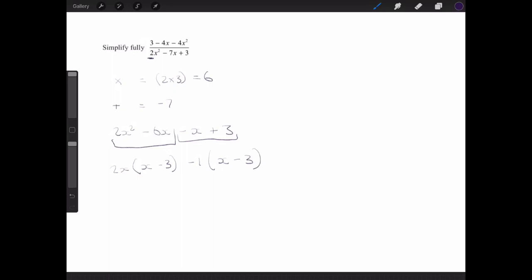I've got that now. So my denominator can be rewritten as 2x minus one and x minus three. So I've got the denominator sorted.